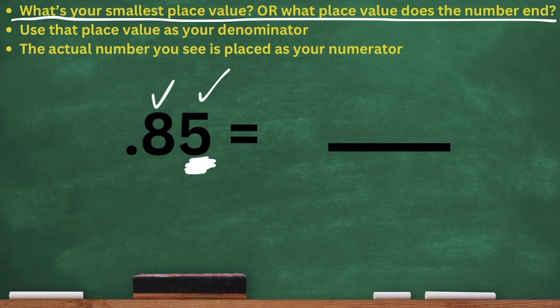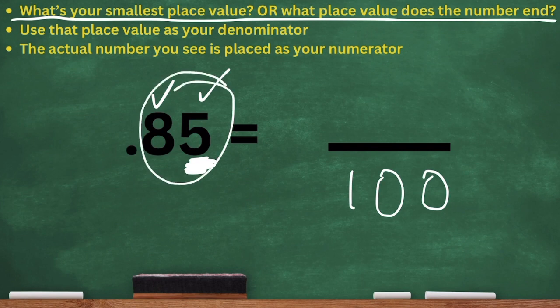So being that the five is in the hundredths place, I'm going to place 100 as my denominator. Now I'm going to take the actual number that I see, which is 85, and place it as my numerator. And there you go, there you have it.